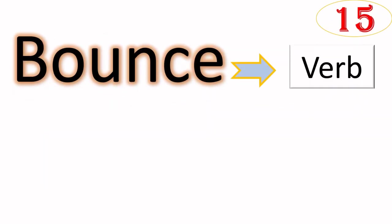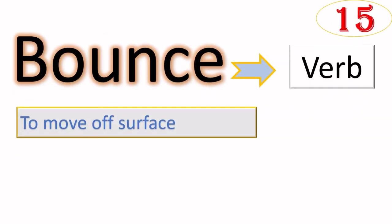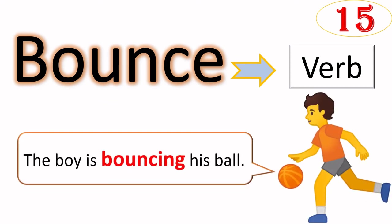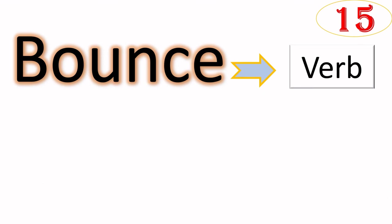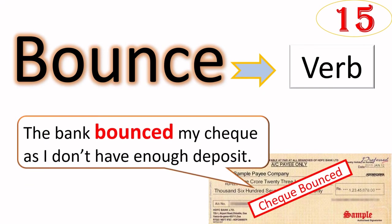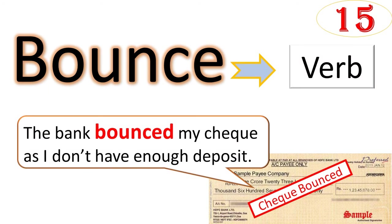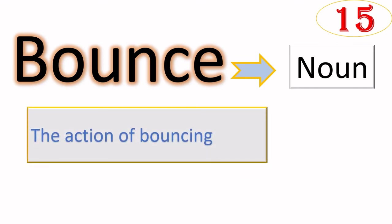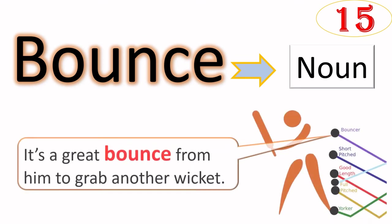Bounce as verb means to move up and down off a surface. For example, the boy is bouncing his ball. Bounce can also mean something cancelled. For example, the bank bounced my check as I don't have enough deposit. When we use the word bounce as noun, it means the action of bouncing. An example can be it's a great bounce from him to grab another wicket.